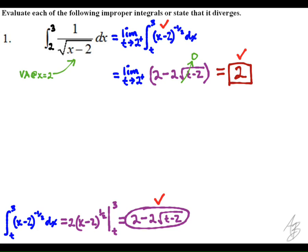Points were given on this problem for the final answer of 2, for rewriting the integral as a limit with a variable as the lower limit, and for evaluating that definite integral and limit to get an expression depending on the variable. Keep in mind that I chose t as my variable, but any variable choice here would be acceptable.